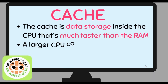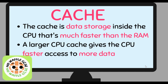Cache. The cache is data storage that's found inside the CPU, and it's really just a faster version of the RAM. However, it only holds a very small amount of temporary information. A larger CPU cache gives the CPU faster access to more data, because the cache holds frequently used data. So it's much faster to access data from the cache than from the RAM. Therefore, the bigger the cache, the more data you can access faster.